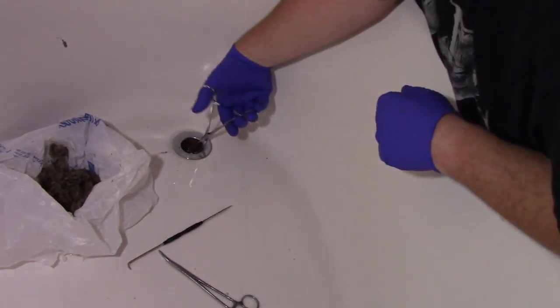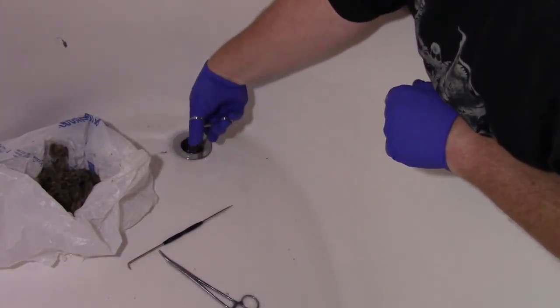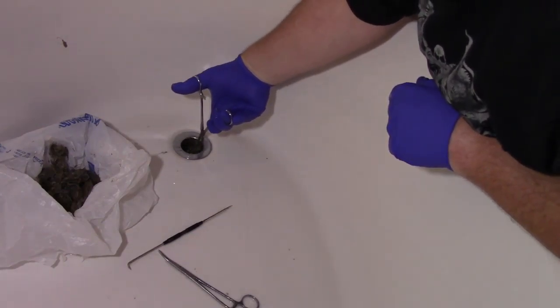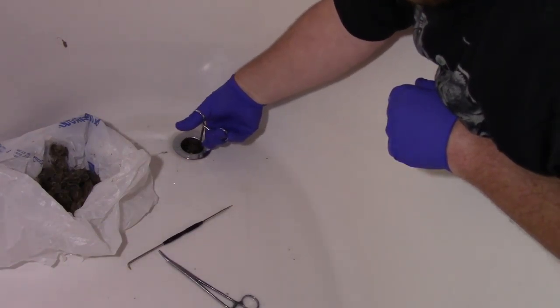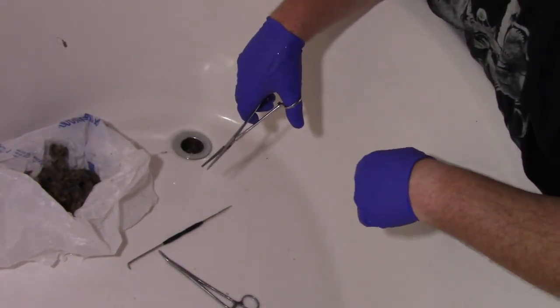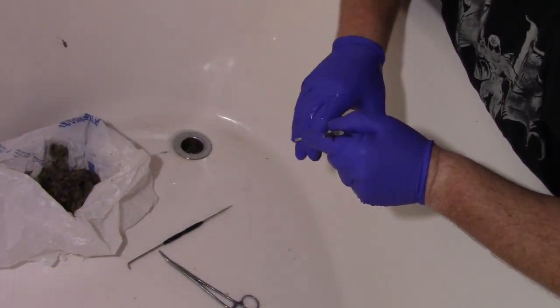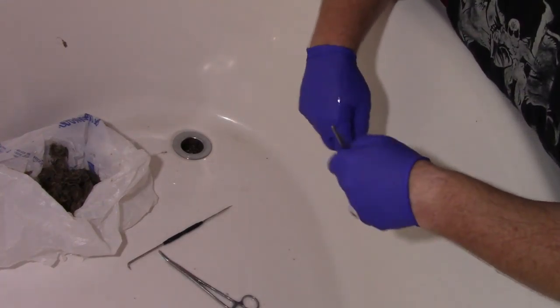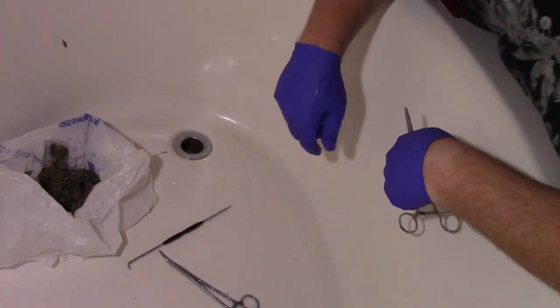Now one important piece I forgot is a flashlight, because what you need to do is be able to see everything down there. So what I'm going to do is finish this up and then I'll show you what the inside looks like after we're clean.